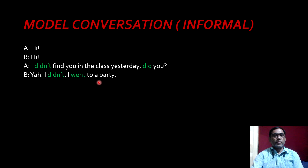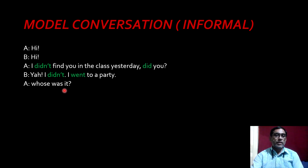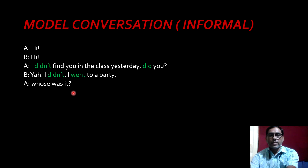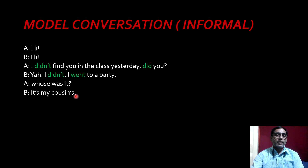I went to a party. Oh, we understood that B went to a party — that's why he didn't come to school yesterday. Whose was it? Means whose party was it? It's my cousin's. Look here — 'it's' has two meanings: it is the contracted form of 'it was' or 'it is.' And 'cousin's' — the apostrophe here shows the possessive case, whereas the other apostrophe shows the contracted form.